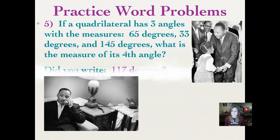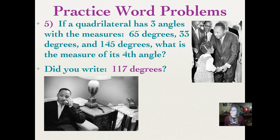Did you write 117 degrees? You could have added 65 plus 33 and 145, and then subtracted them all from the total sum of all the measures of the angles in a quadrilateral, which is 360 degrees. Or you could have taken 360 degrees and subtracted 65 from that, gotten your answer, and subtracted 33 from that, gotten your answer, and subtracted 145 from that. That would give you 117 degrees just like the first strategy would. Remember, there's more than one way to get to Phoenix and there's more than one way to solve a problem in math.